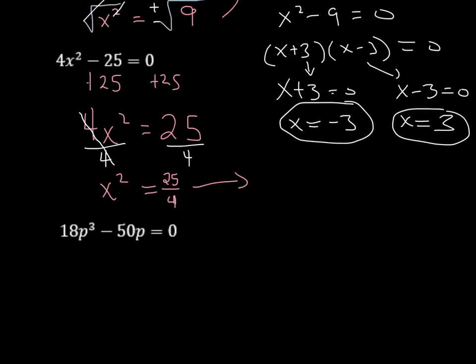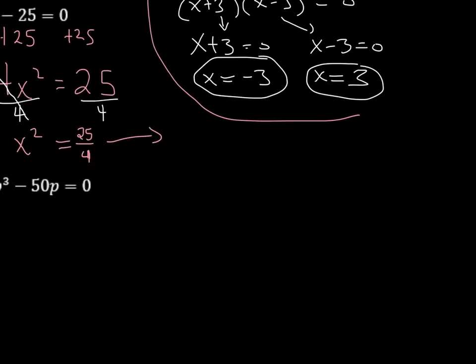Now we're not done with this yet. Sorry, I'm going to move down here so we can have a little bit more room. So over here we have x squared equals 25 over 4. Now, how do we get rid of the x squared? We just talked about this. We're going to put the square root on both sides. We're going to get x squared equals plus or minus square root of 25 over 4.